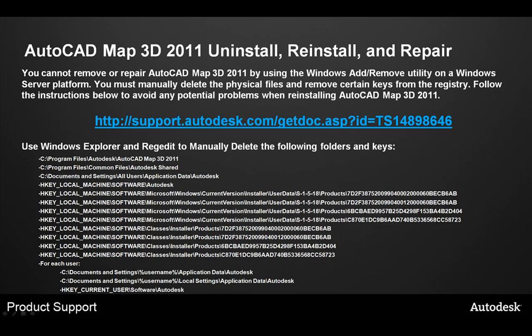You cannot uninstall AutoCAD 2011 on a Windows Server operating system in the normal way. In order to uninstall, reinstall, or repair AutoCAD Map 3D 2011 in the Citrix XenApp environment, you will need to manually remove folders as well as registry entries. The list is quite extensive — it is provided as technical solution TS148986.